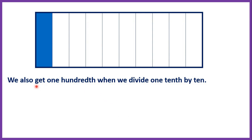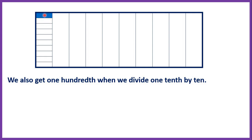We can also get one hundredth when we divide one tenth by ten. In this rectangle we can see that one part out of ten, or one tenth, is shaded. If we divide this shaded part into ten and keep only one tenth, then you can see that we have one hundredth — the same amount of the rectangle shaded as on the previous page. So 0.1 divided by ten equals 0.01, or one tenth divided by ten is one hundredth.